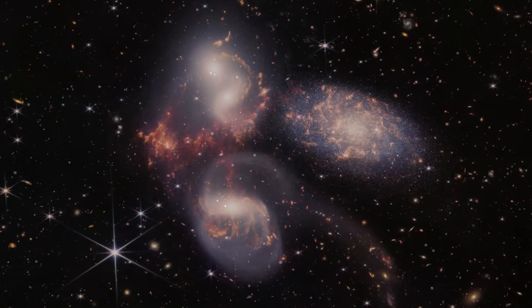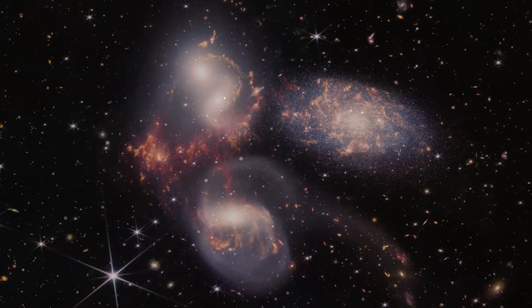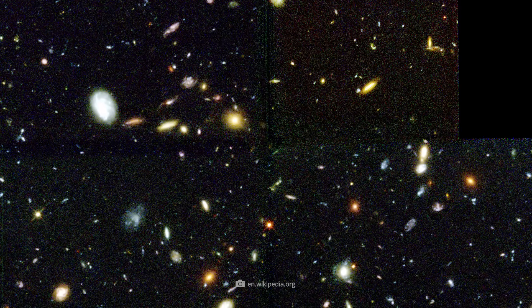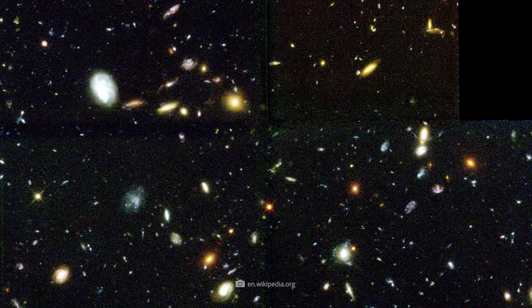However, since James Webb can see through cosmic dust using infrared technology, the images are much more precise and even older galaxies become magically visible. There is a truly crazy story behind the first deep image.